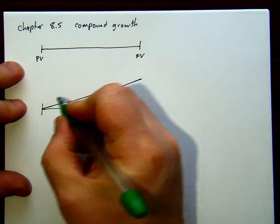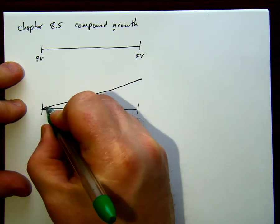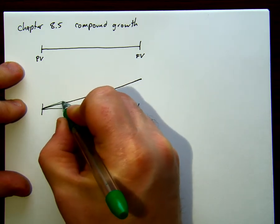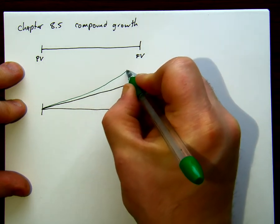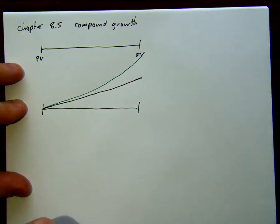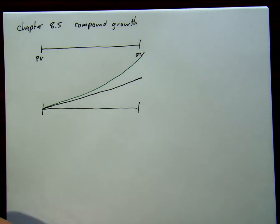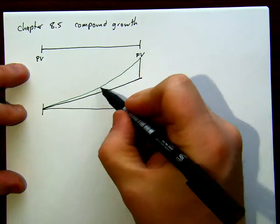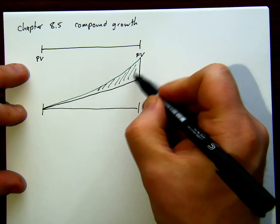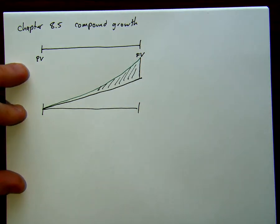After that, we're going to get a little bit better because we're getting interest on interest, and over time, we're getting exponential growth. So we're going to get a bunch more interest with compound interest than we did with simple interest.